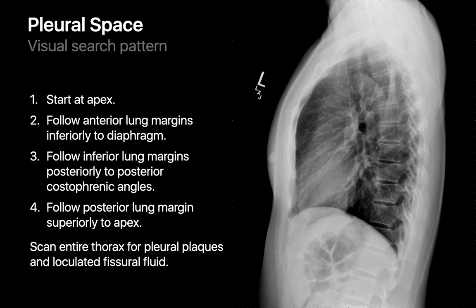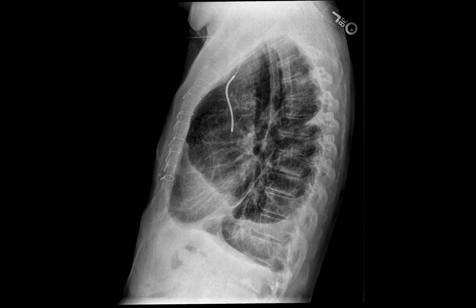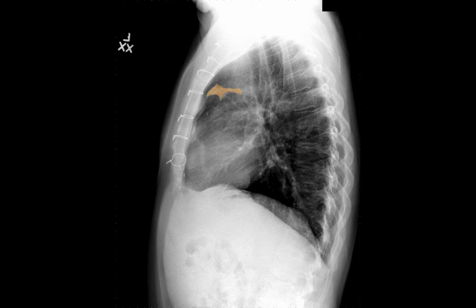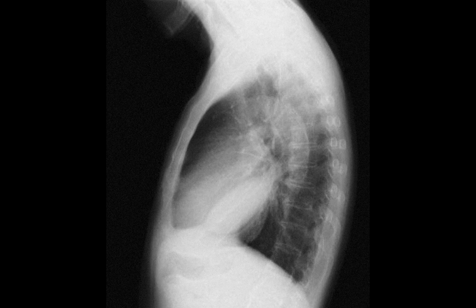The visual search then moves to the pleural space, beginning at the apex and following the anterior lung margin inferiorly to the diaphragm, looking for anything preventing the lung from expanding to meet the rib cage inner surface. Follow the inferior lung margins posteriorly to the posterior costophrenic angle and up the posterior lung margins back to the apex, then spot-check the lung fields for pleural fluid or plaques. You may find conspicuous blunting of costophrenic angles from pleural effusion, calcified asbestos-related pleural plaques, or focal pleural fluid along a major fissure.